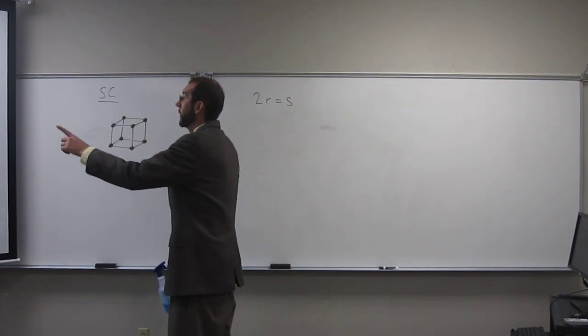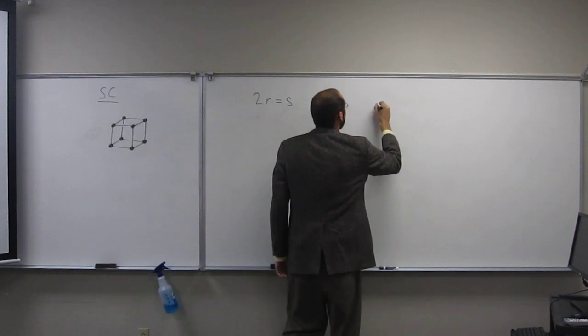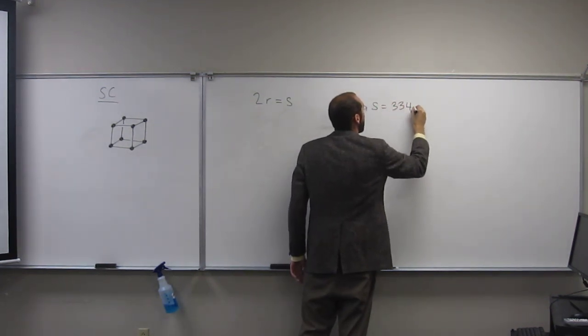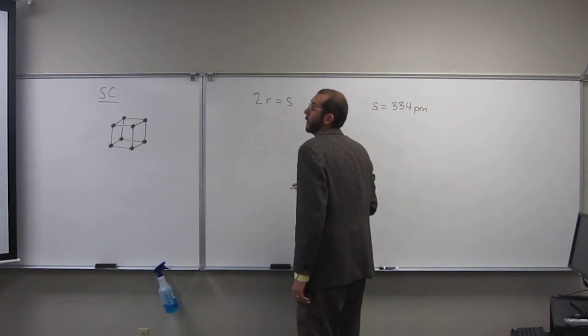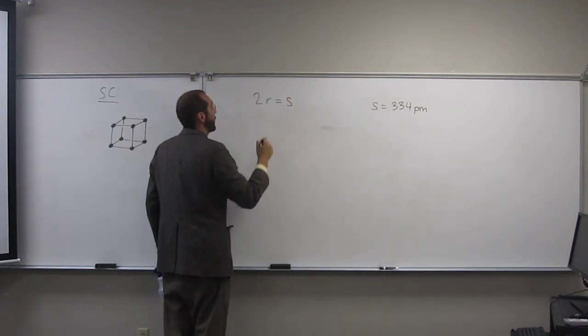And it gave us the length of the side, which is s. So s equals 334 picometers. And it's asking us, well, what's the radius of the polonium atom?